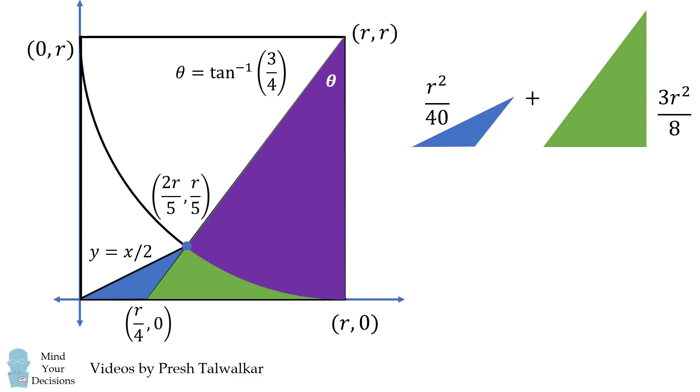We now need to solve for the area of this circular sector. The area of a circular sector is 1 half R squared times the angle of that sector. We know that the radius of this circular sector is R, so this area will be R squared over 2 multiplied by this central angle, which is the inverse tangent of 3 fourths.